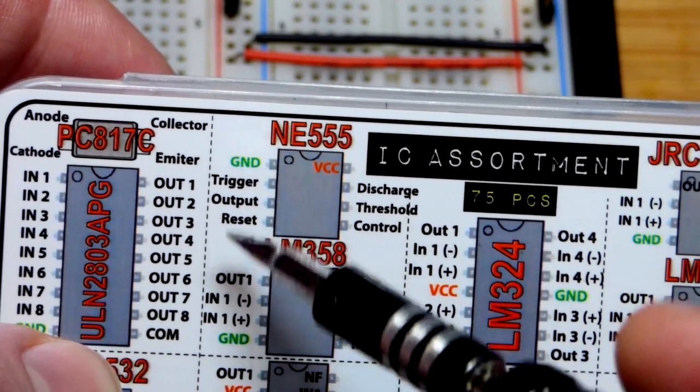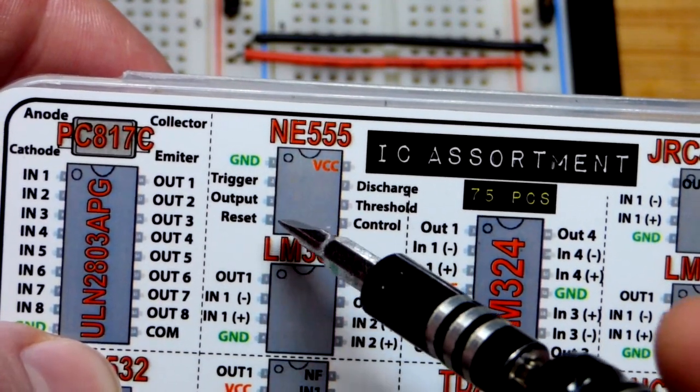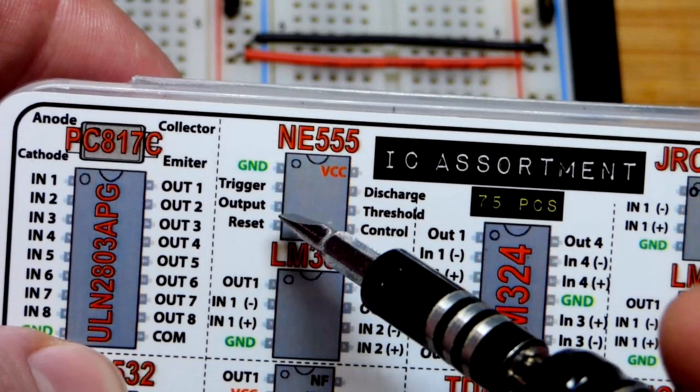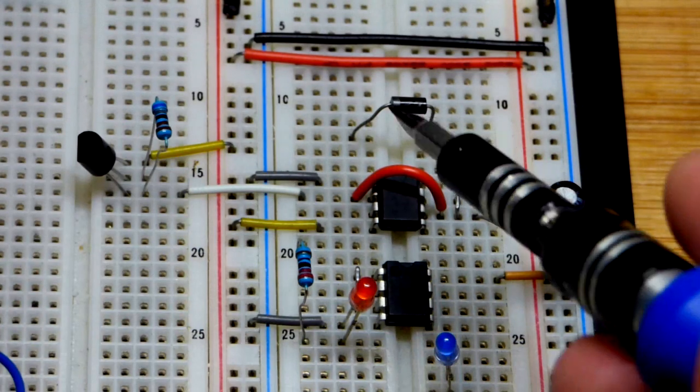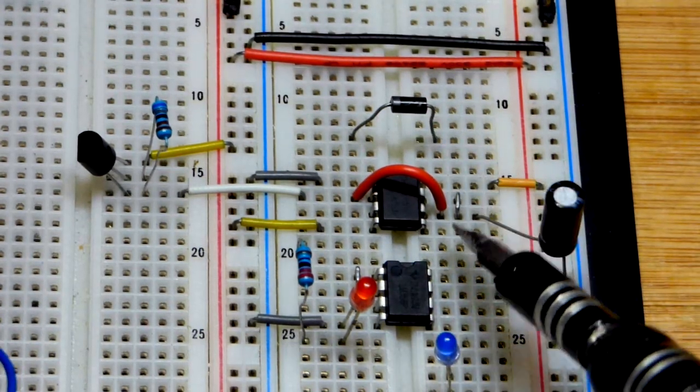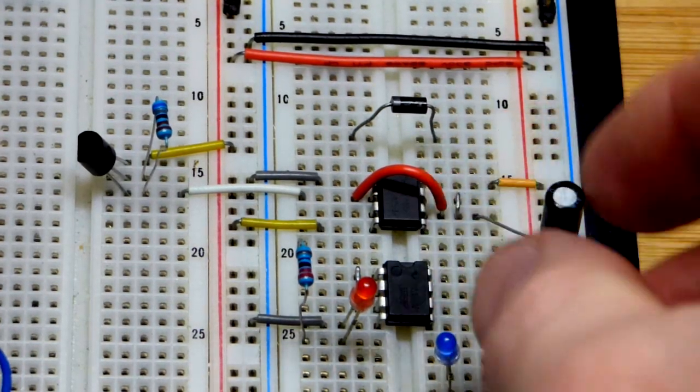If it gets a low input, then it resets the 555 timer, which we don't want to do at all in the circuit. Output and control are floating until we add the diode. You can see the pin layout there.